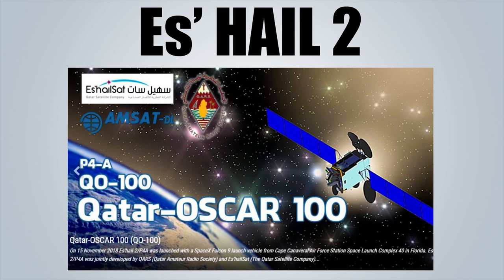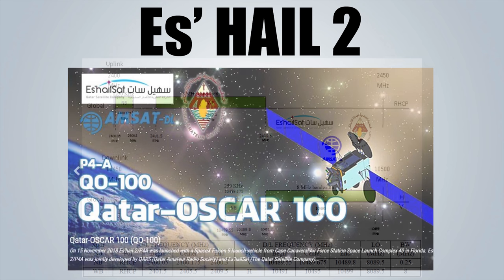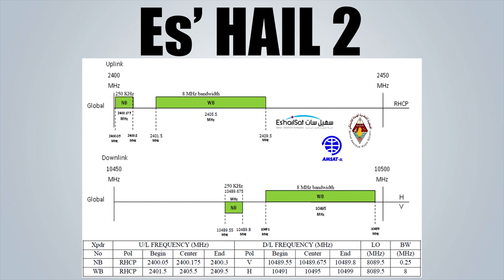What's exciting about this satellite is that in addition to the commercial service, the payload of Es'hail-2 includes a linear transponder with a bandwidth of 250 kHz for narrowband and 8 MHz exclusively for the amateur radio satellite service. The uplink is on 2.4 GHz, which is S-band, and the downlink is on 10.45 GHz, which is X-band.